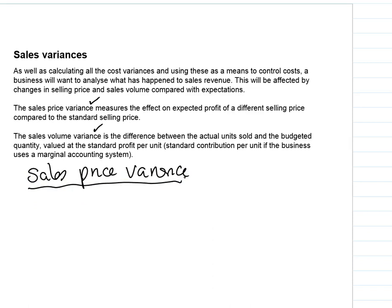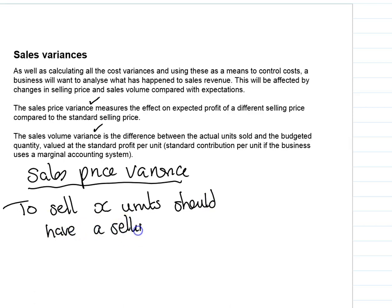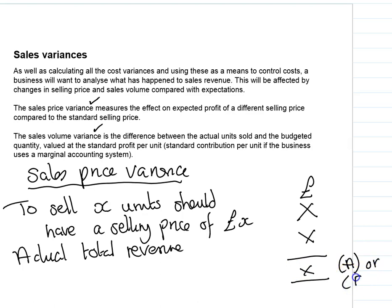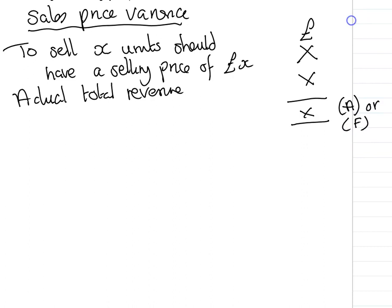What has happened to price and what has happened to volume, and how they will impact on overall profitability. Starting with the sales price variance — this could have happened because of an unplanned increase or decrease in selling price, perhaps due to the actions of our competitors. We calculate it as follows: to sell X number of units, we should have a selling price of X pounds, giving us a total expected revenue, which we then compare to our actual total revenue to give us our variance — adverse or favorable.